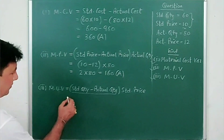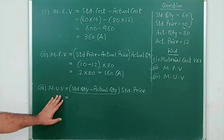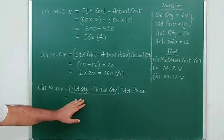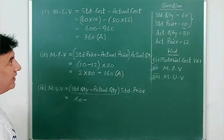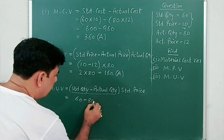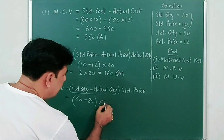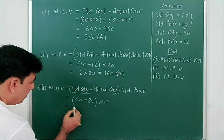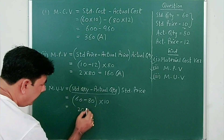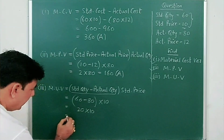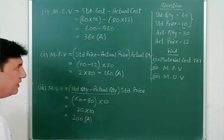For material usage variance: standard quantity is 60 minus actual quantity of 80 — here also the situation is adverse. Multiply by standard price of 10. So 60 minus 80 gives 20, into 10, equals 200. This is also adverse.